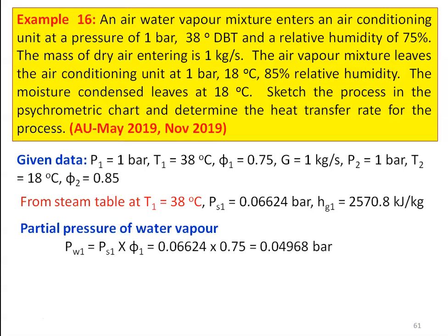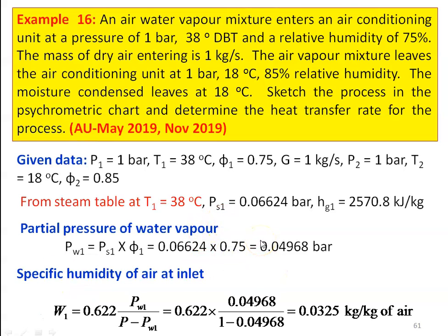The partial pressure of water vapor PW1 equal to PS1 into φ1, where PS1 is saturation pressure and φ1 is relative humidity. So PW1 equal to 0.06624 into 0.75 equal to 0.04968 bar. Using this partial pressure of water vapor, we calculate the specific humidity at inlet: W1 equal to 0.622 × PW1 divided by (P minus PW1) equal to 0.622 × 0.04968 divided by (1 minus 0.04968) equal to 0.0325 kilogram per kilogram of air.